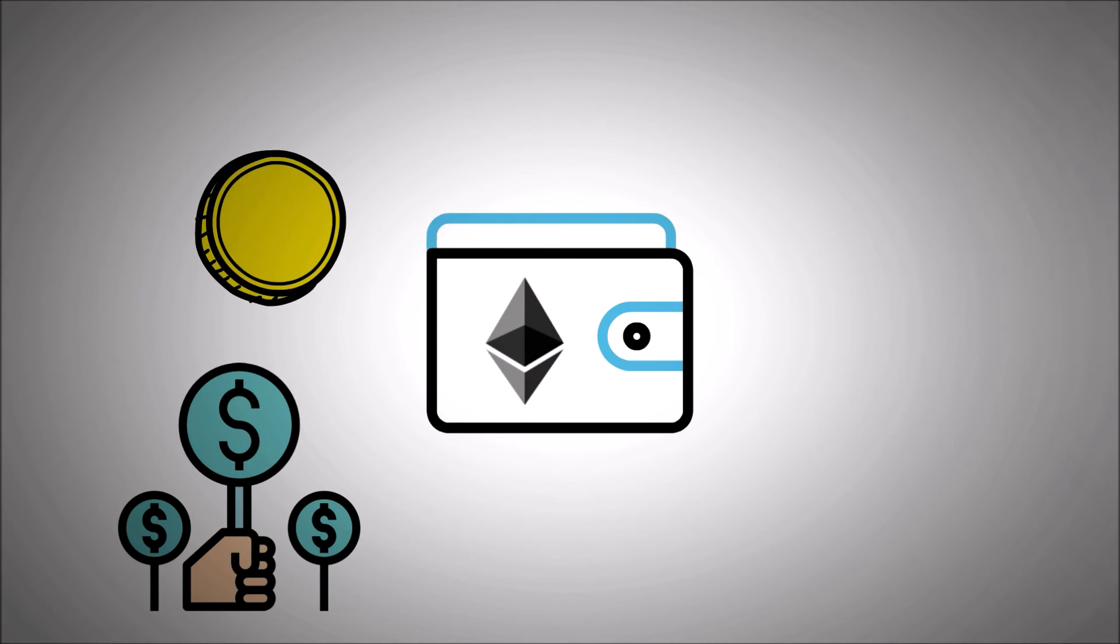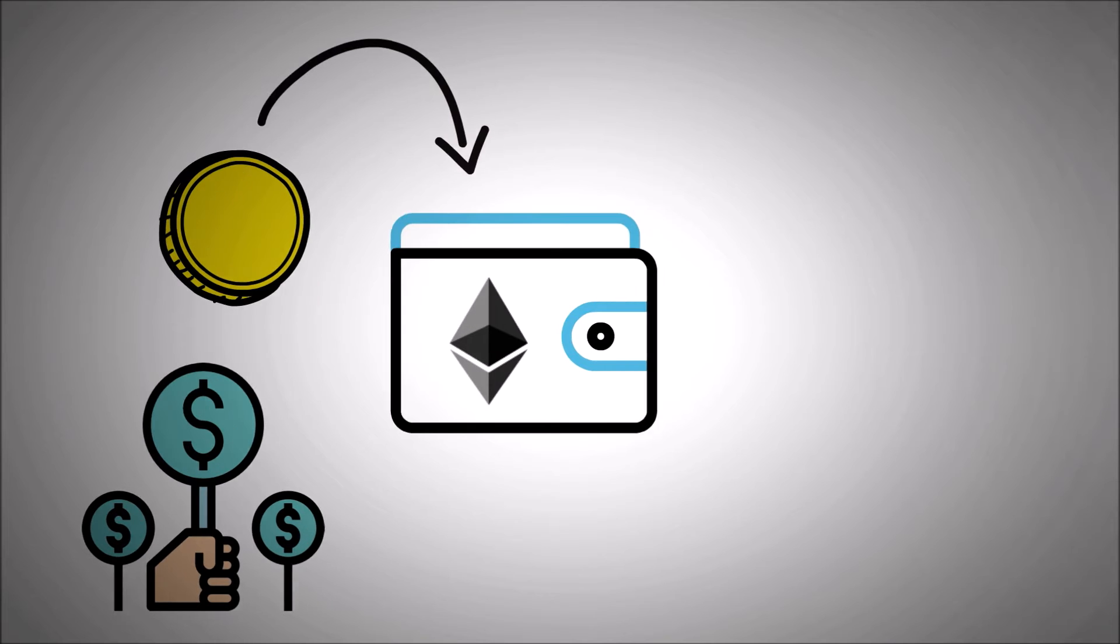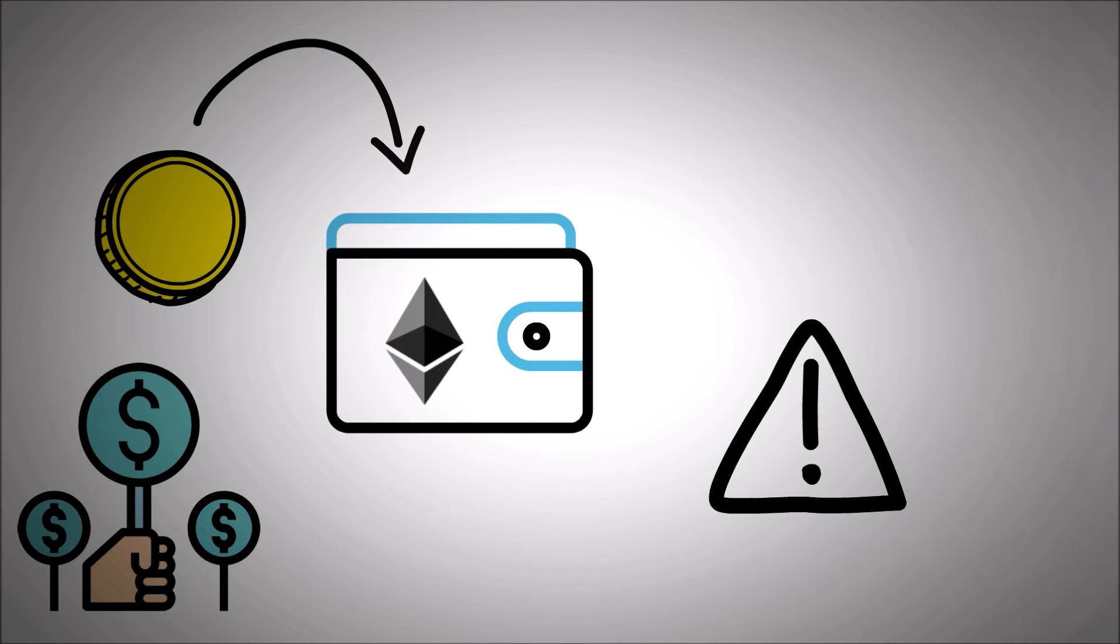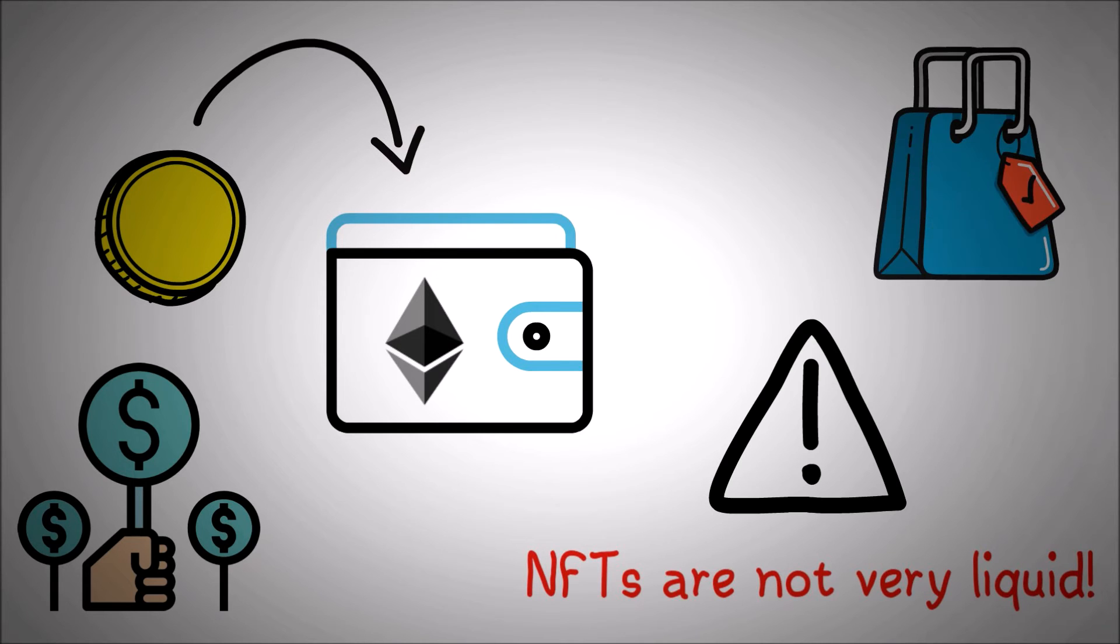Using cryptocurrencies, you can buy or bid on the NFT. An NFT is a token, just like cryptocurrency. Once you buy it, it is stored in your wallet. The important thing to keep in mind is that, unlike cryptocurrencies, NFTs are not very liquid. You can list the NFTs for selling on the marketplace, but there isn't necessarily a buyer who is willing to purchase them.